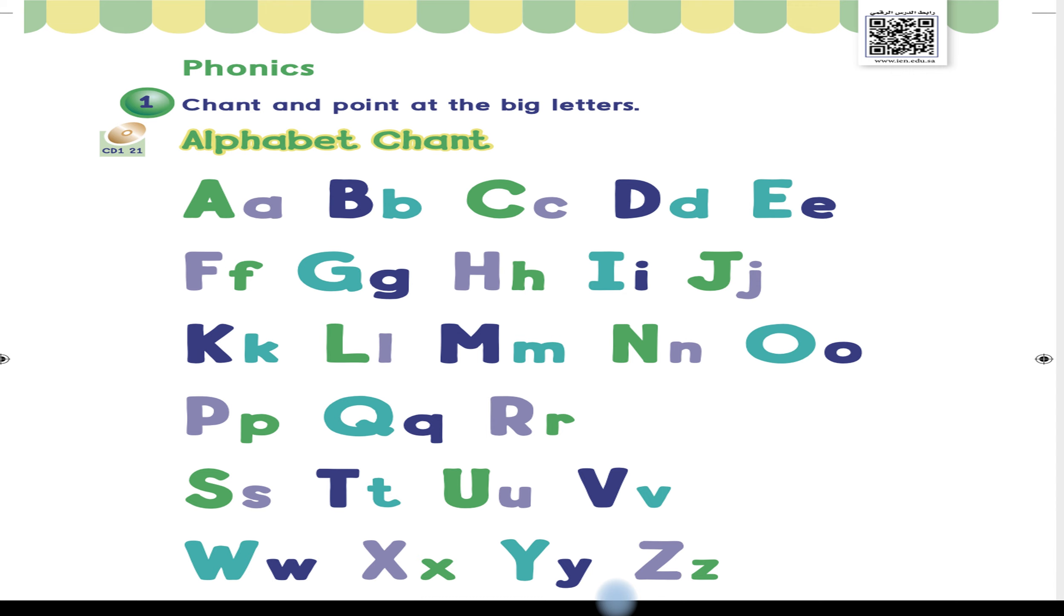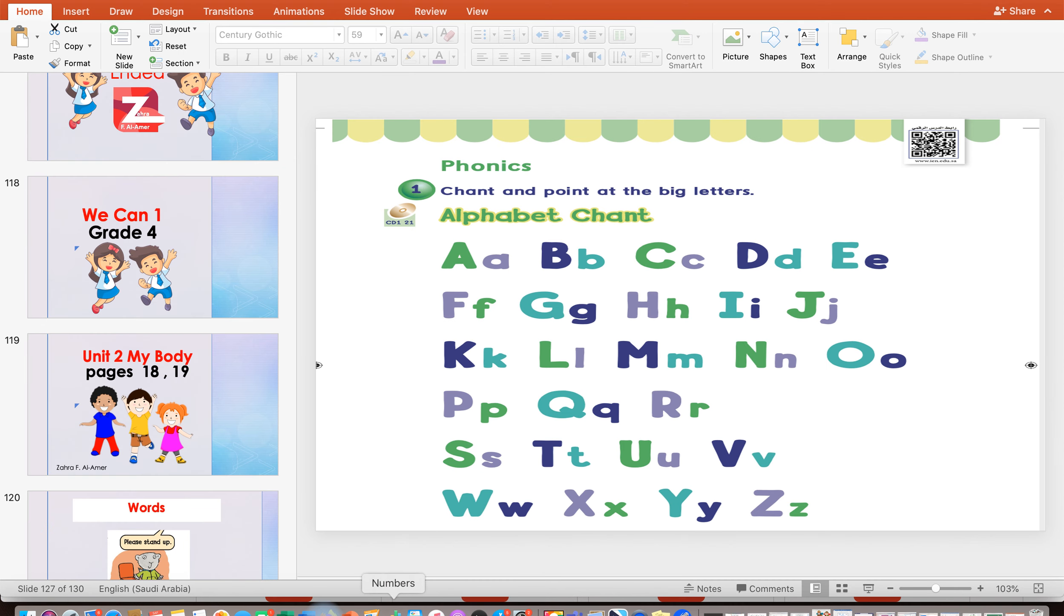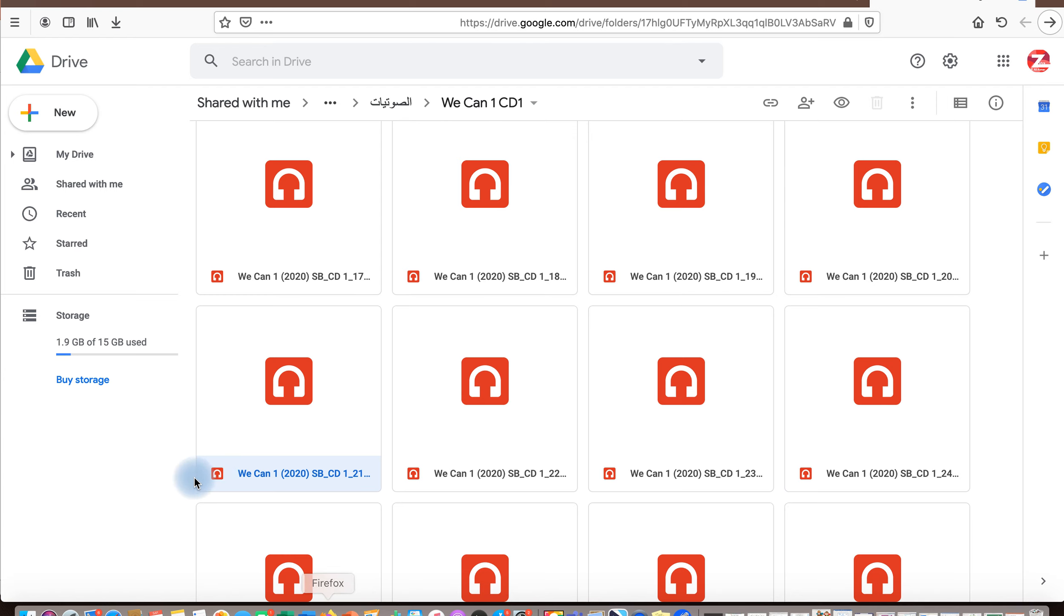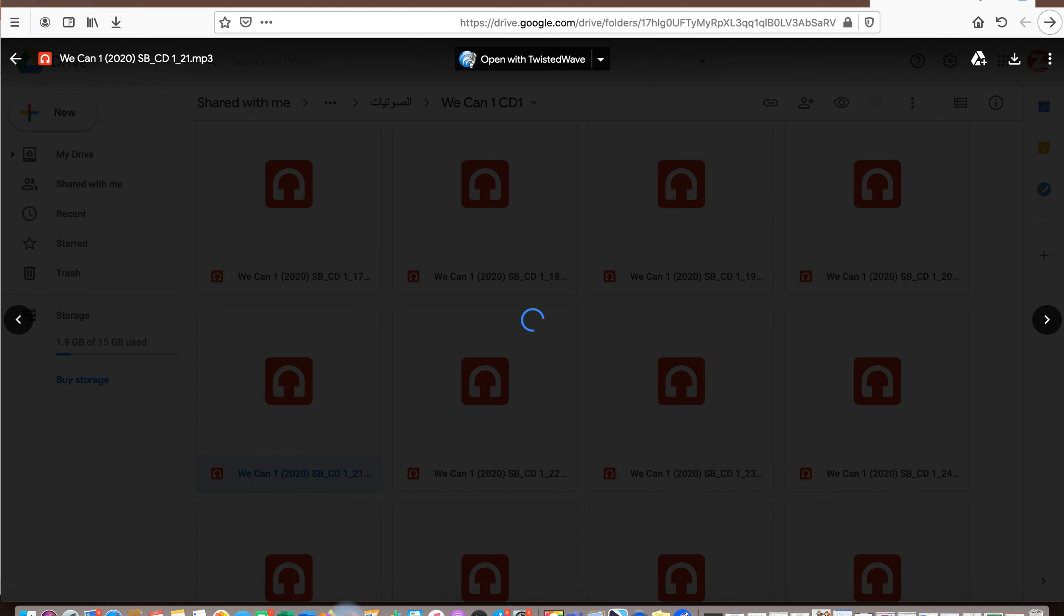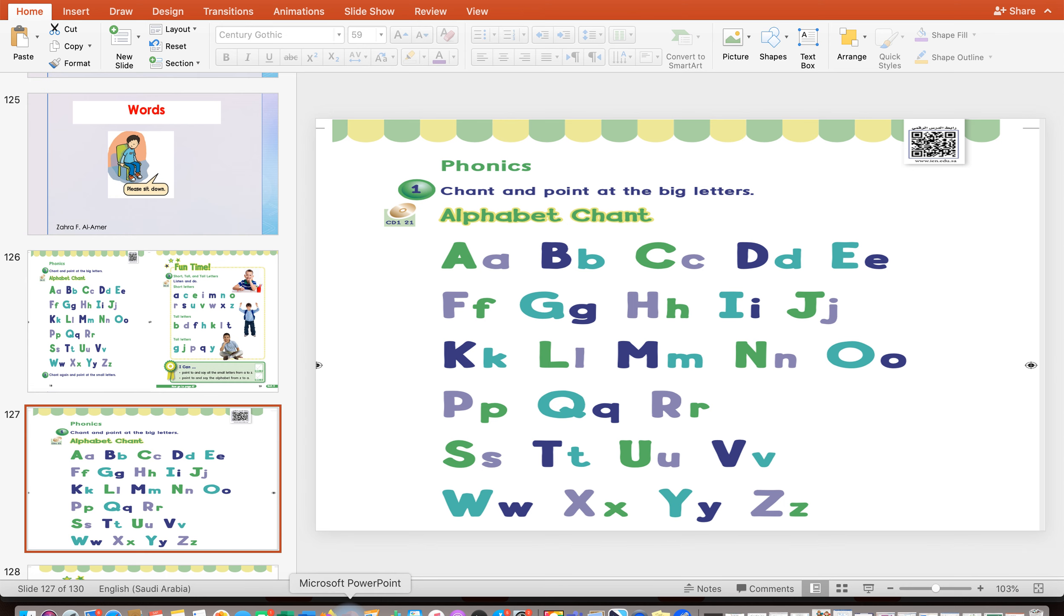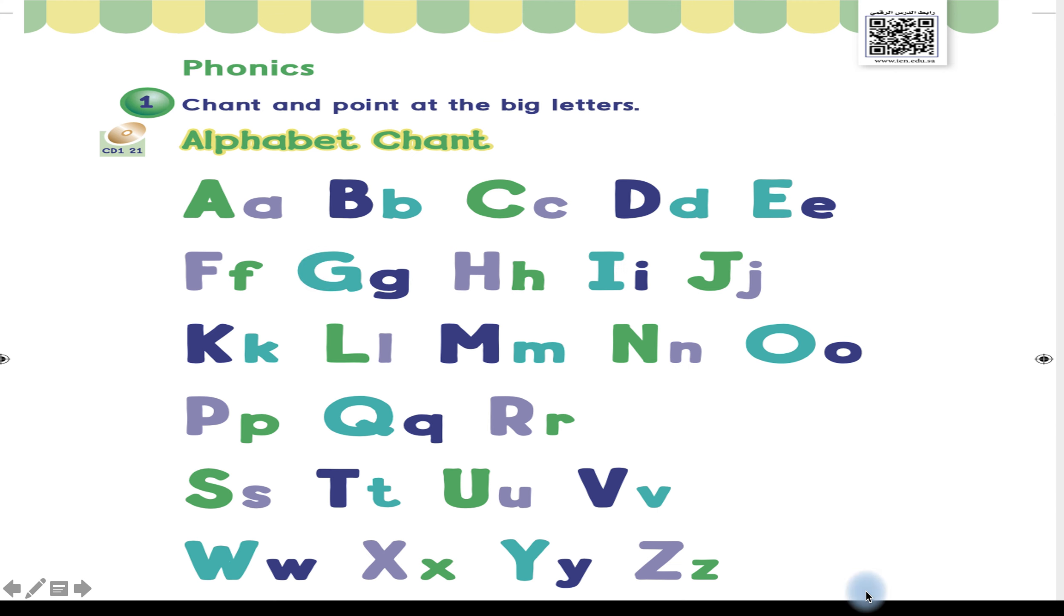Alphabet chant. Phonics exercise one: chant and point at the big letters. Alphabet chant: A, B, C, D, E, F, G, H, I, J, K, L, M, N, O, P, Q, R, S, T, U, V, W, X, Y, Z.